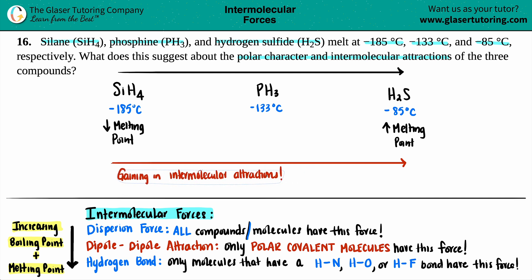If we actually drew out these molecules with the Lewis structures, we would see that SiH4 is indeed completely symmetrical. You have a silicon in the middle surrounded by four hydrogens. There are no lone pairs in the middle, so this molecule is completely nonpolar. The only intermolecular forces that SiH4 has is dispersion forces, because on a grand scheme of things, all molecules or all compounds have dispersion forces by default.